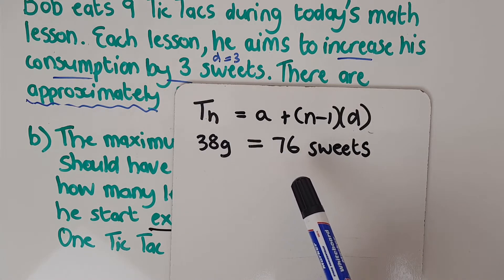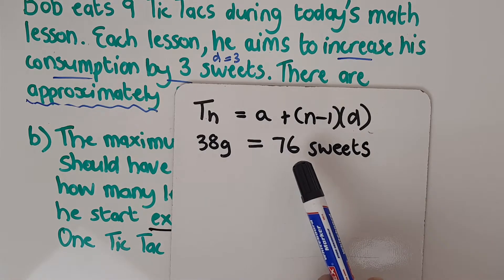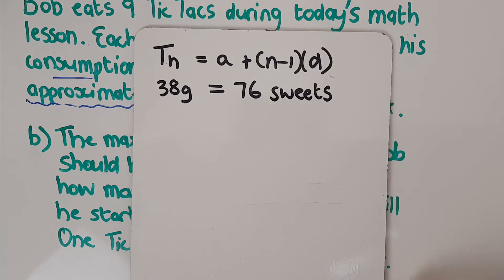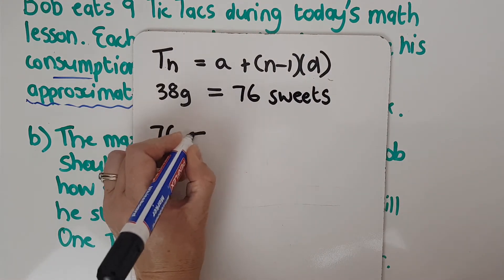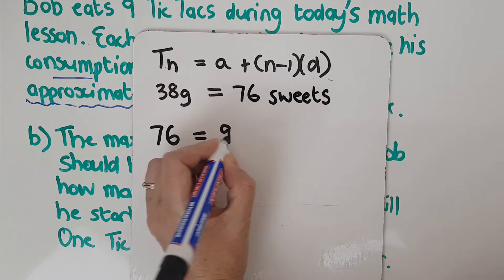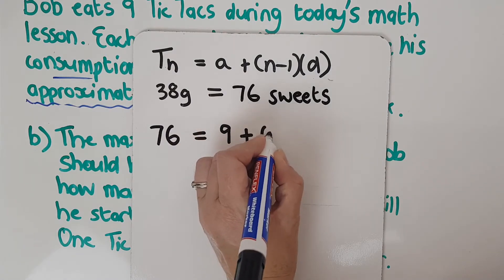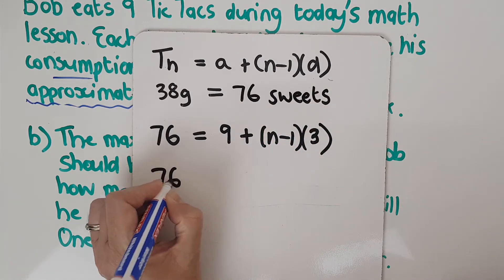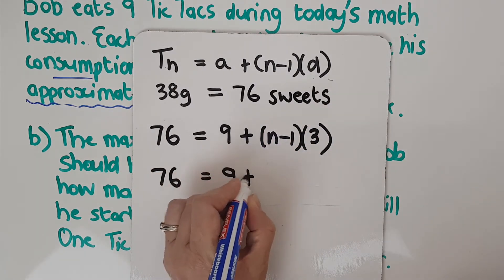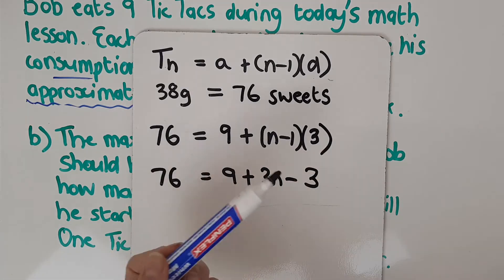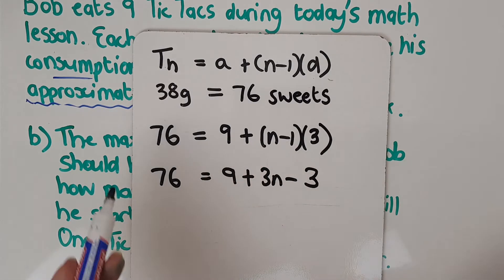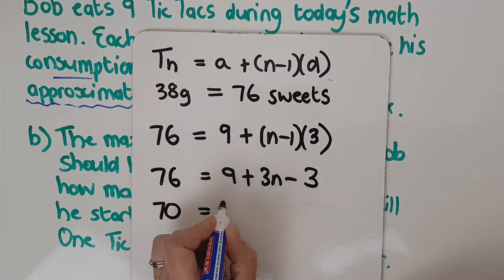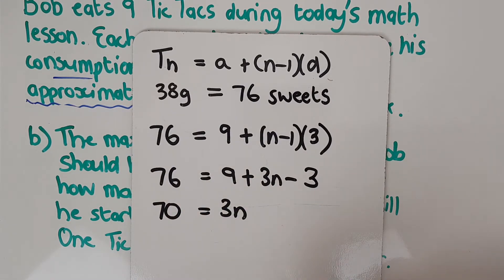So on what day is he going to exceed that? It's when the 76 sweets. That's a lot. That's like two boxes. So it's when the Tn is the 76. So it's going to be 76 equals, what was a again? 9, plus I don't know this because that's what I'm working out, and the d was 3. So when will we get to that point? It's going to be 3n minus 3. I'm going to add the 3, and I'm going to subtract the 9. So that's going to get me to 70. And the 70 is 3n. Again, I'm not going to get a comfortable number.